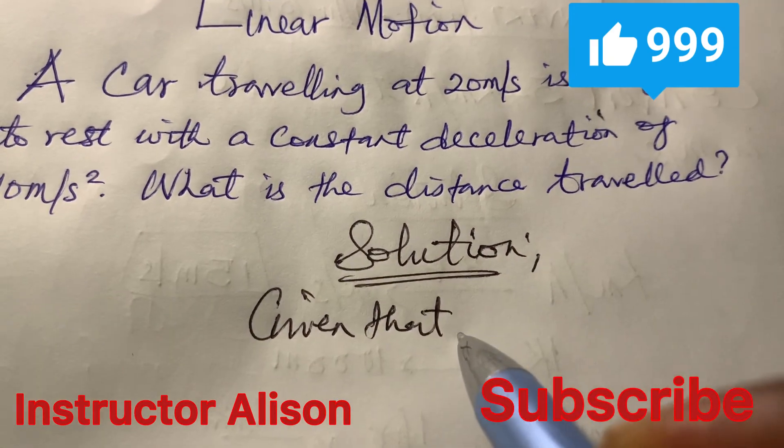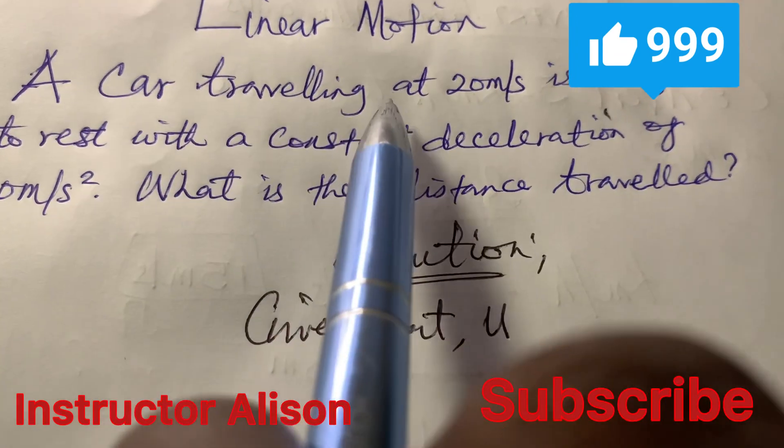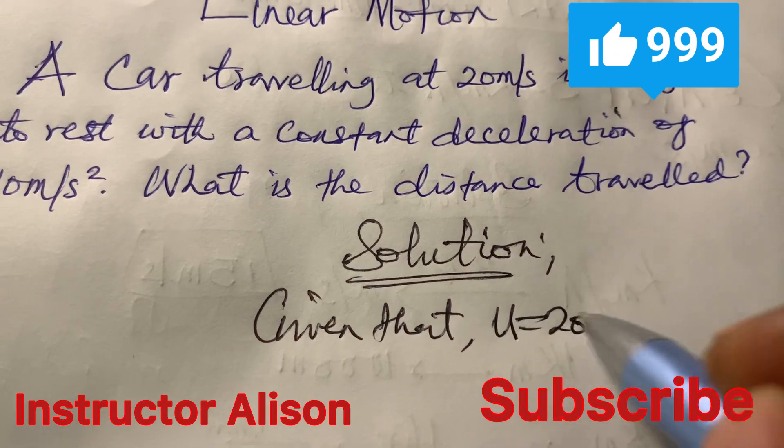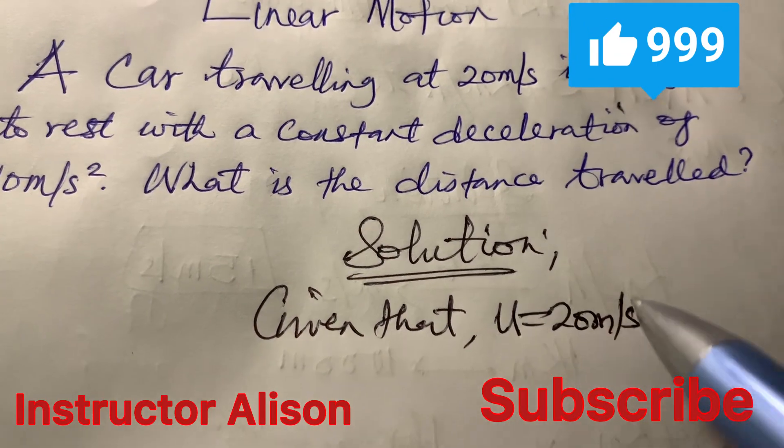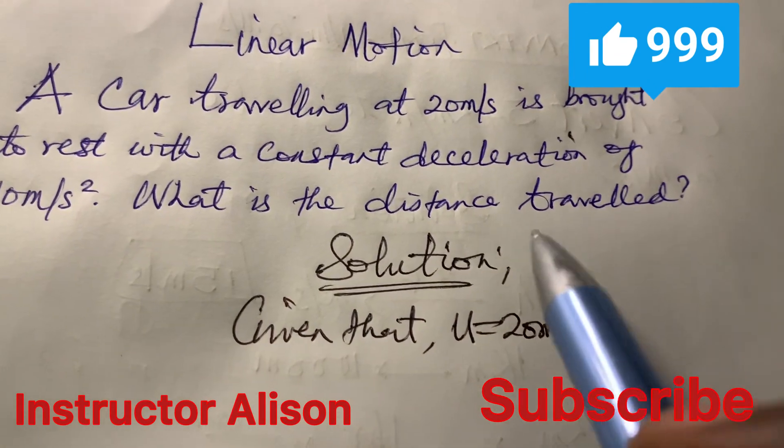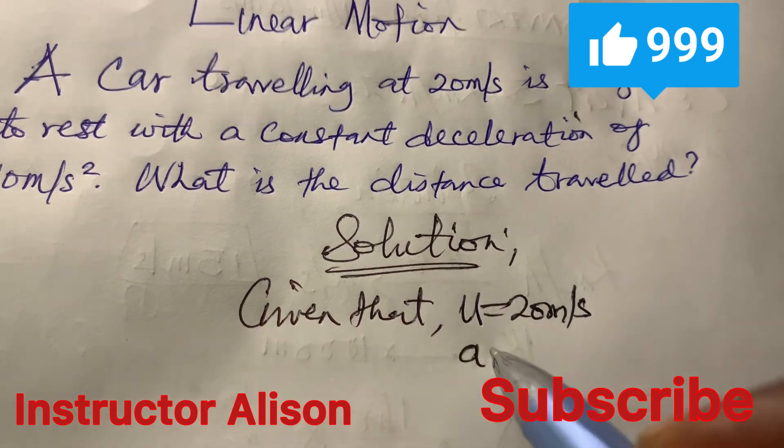From the given parameters we have that the initial velocity, remember a car traveling at 20 meter, that is the initial velocity 20 meter per second. Meter per second is unit for velocity.